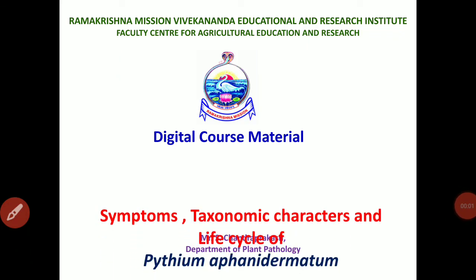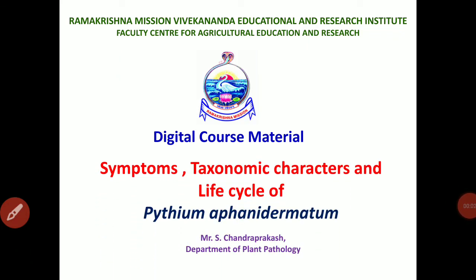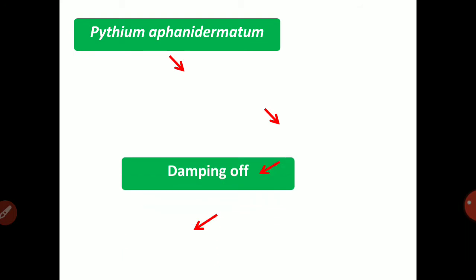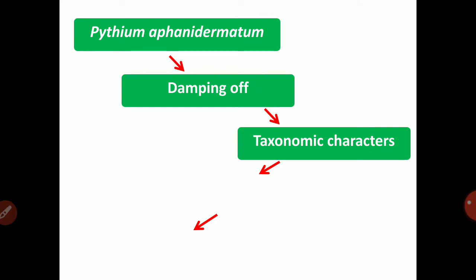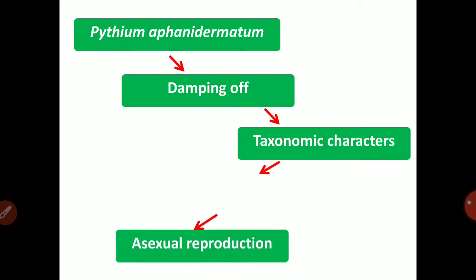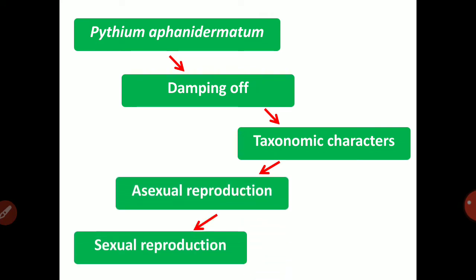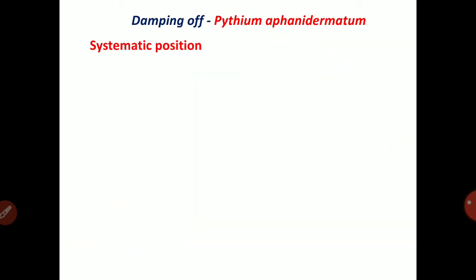Good morning students. In this class we will study about symptoms, taxonomic characters and life cycle of Pythium aphanidermatum. Pythium aphanidermatum will cause the damping off disease. In the taxonomic characters, we will cover asexual reproduction and sexual reproduction. Let's start the class.